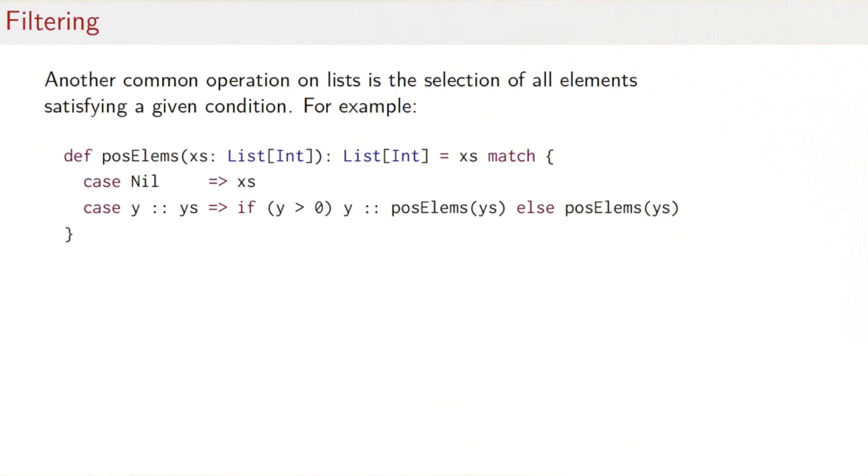So here's another common operation on lists. Selecting all elements that satisfy a given condition. For instance, you might want to select all elements from a list that are positive. Here you have a function posElems. It takes a list of int, gives you back a list of int, and the pattern matching definition would read as you see here. For the empty list, we can just return it. If it's non-empty and the first element is in fact greater than zero, it's positive, then we include it in the result list. And otherwise, we just do posElems of the rest of the list. So the first element gets dropped, and we just filter the remainder of the list with posElems.